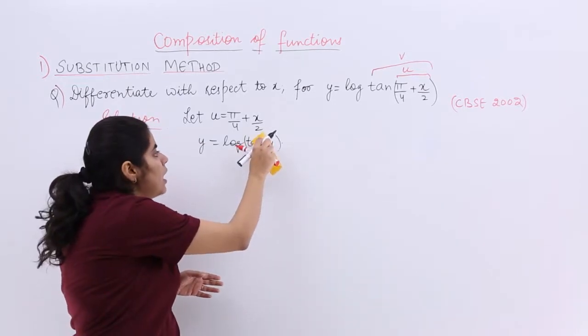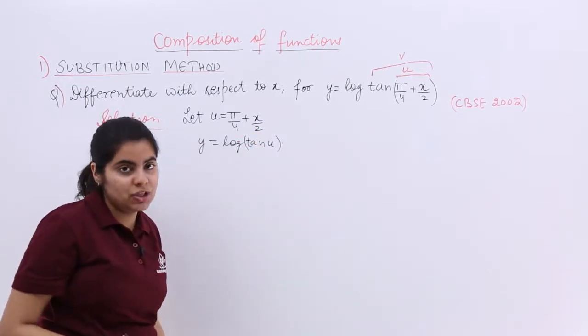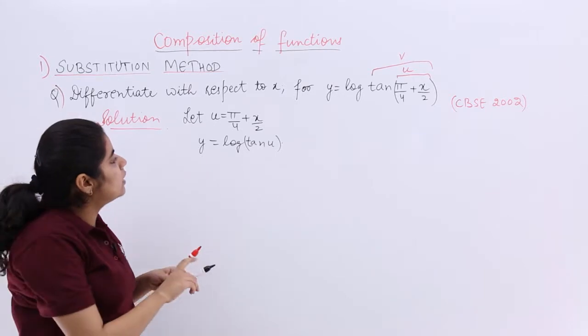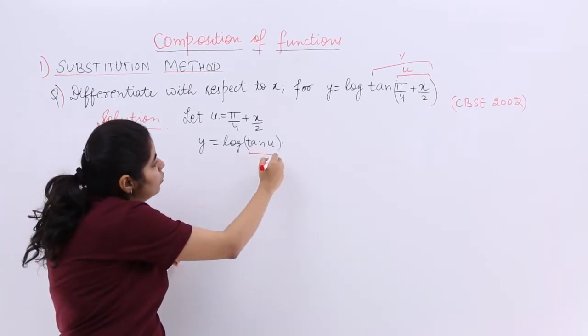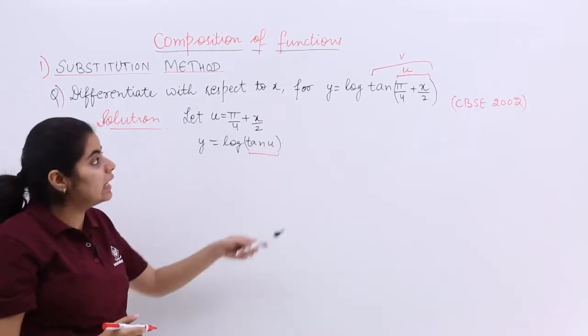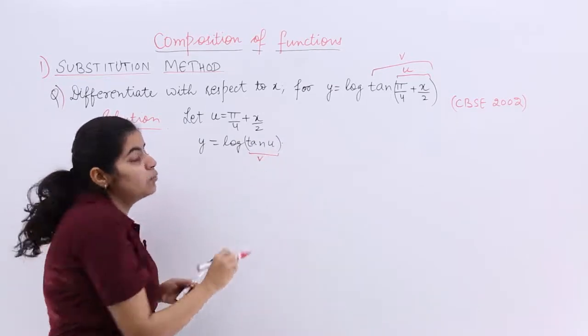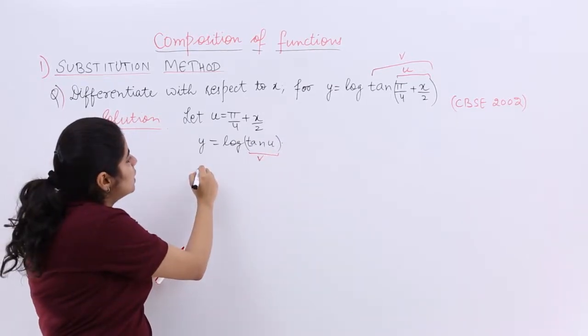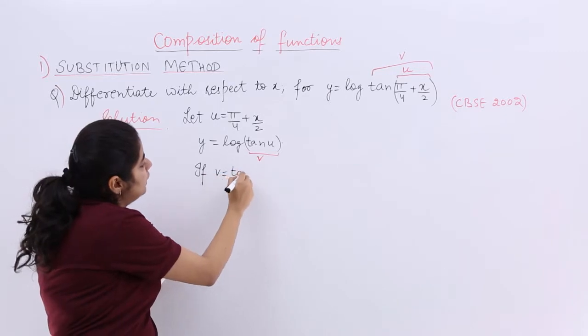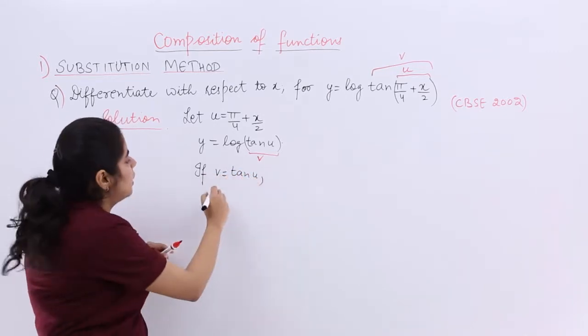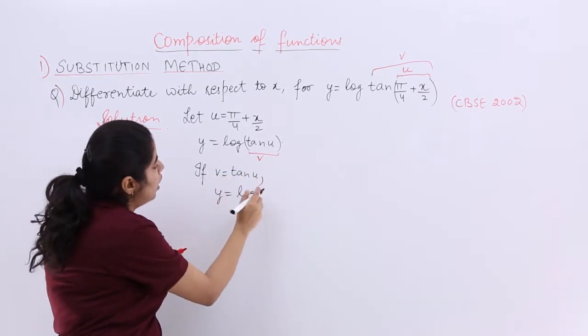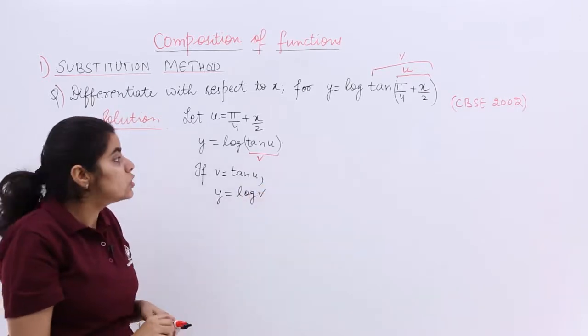Why and how? I saw that this also can be changed if I make tan u as a whole complete again. I say it is v. Then what happens? Then it becomes if v equals tan u, then my question is y equals log v this time.